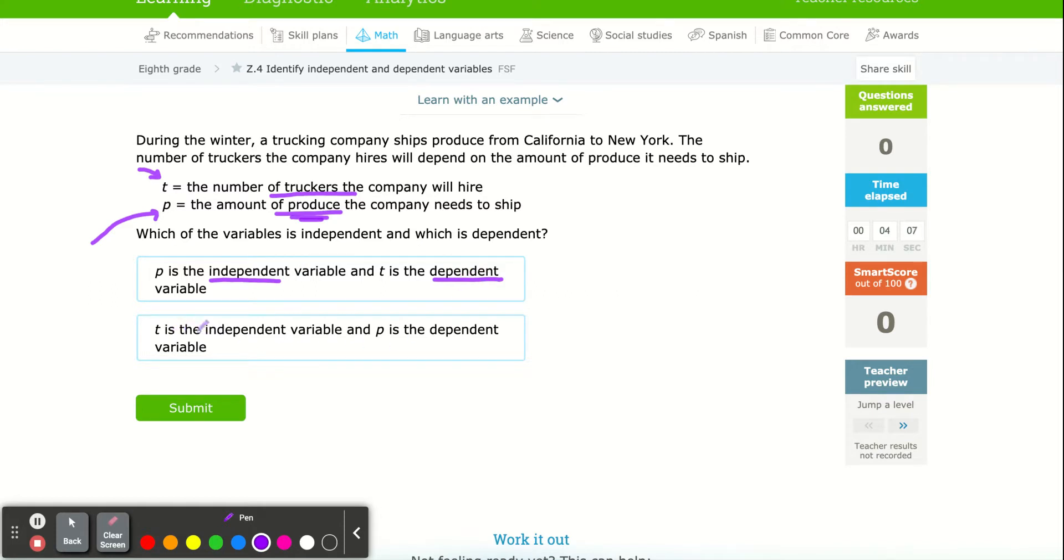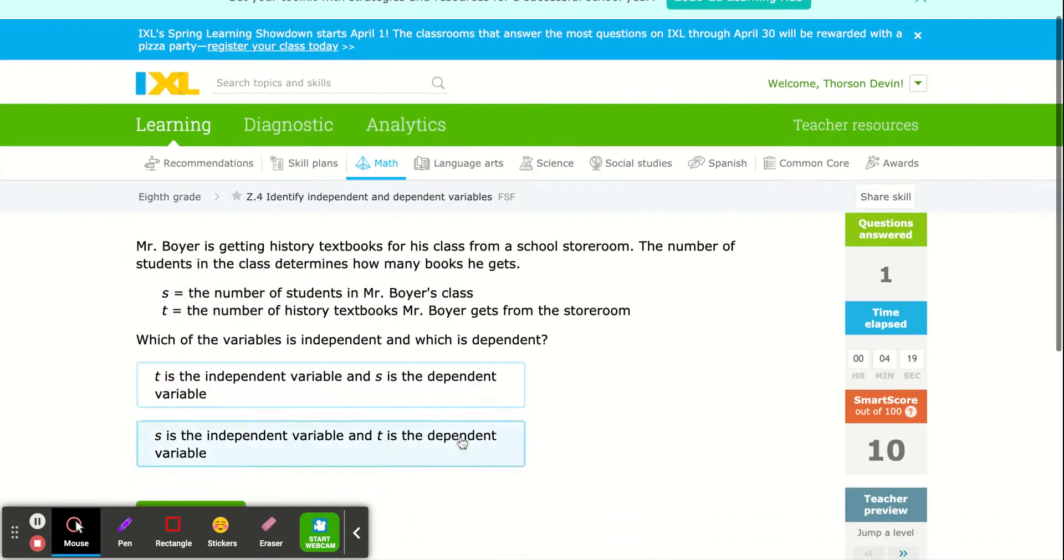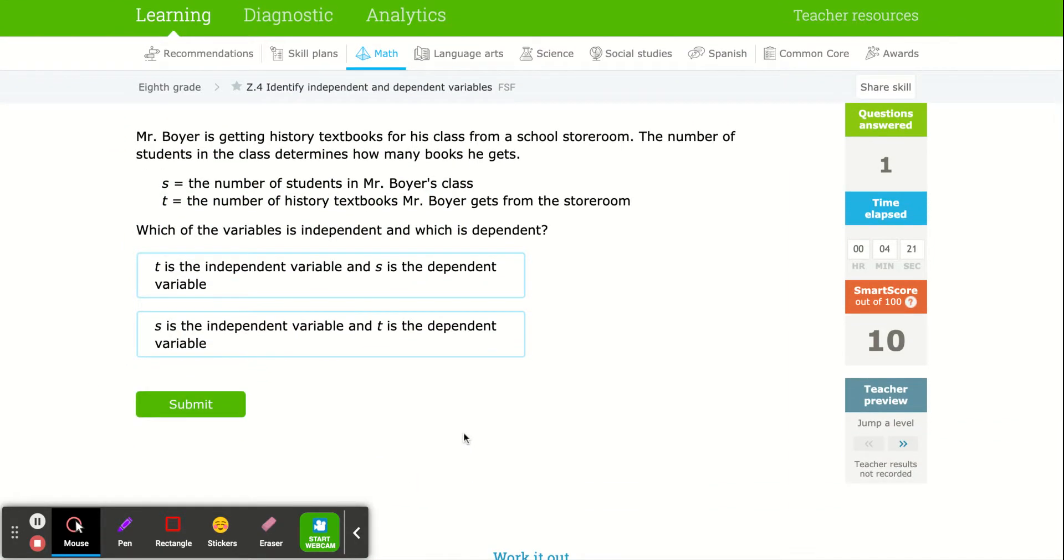And T is the dependent. The number of truckers doesn't determine how much produce. So this one is not the correct one. And again, the first time you walk through this, that might sound kind of confusing. You're probably, I'm so confused, Mr. Thorson. But again, let's walk through this again and try to read the problem and say which depends on which.